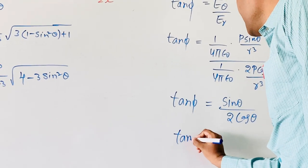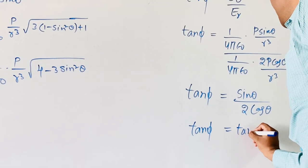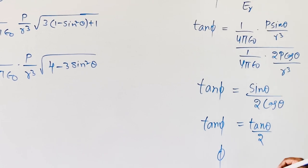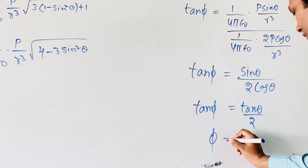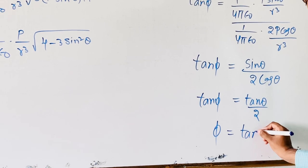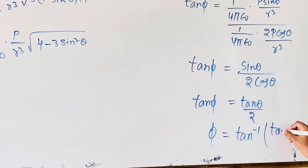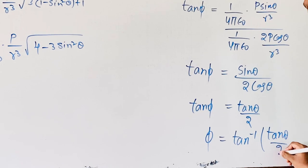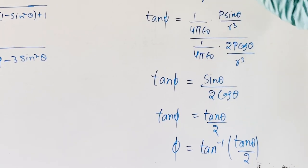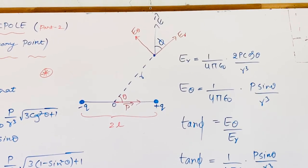So tan pi will become tan theta by 2. Therefore pi will become, by using the inverse trigonometric function rule, tan inverse of tan theta by 2. This is the direction of the resultant electric field with respect to ER.